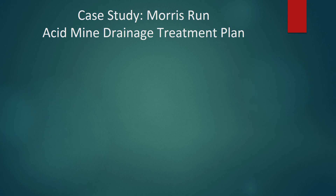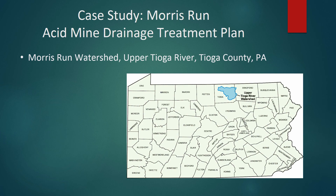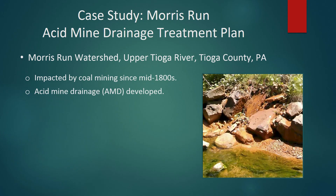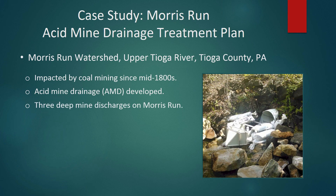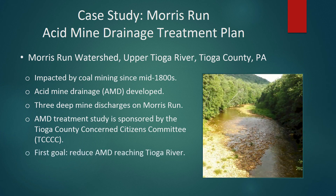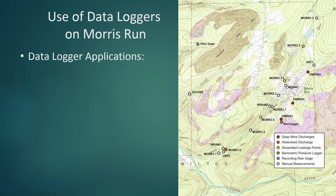Data loggers are widely used in environmental restoration studies. One such project is the Morris Run watershed, a tributary to the upper Tioga River in Pennsylvania. Coal mining began in this area in the mid-1800s, resulting in widespread development of acid mine drainage, or AMD. In Morris Run, most of the AMD now comes from three abandoned deep mine discharges. Under a recent grant, the Tioga County Concerned Citizens Committee is developing a treatment plan — the first goal being to reduce AMD reaching the Tioga River, and the second to eventually restore aquatic life in Morris Run. The project uses 18 sample points to monitor water quality, with data loggers used in five ways to collect data at one-hour intervals between monthly sample rounds.